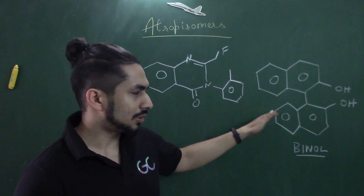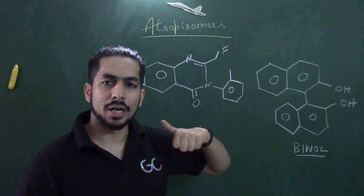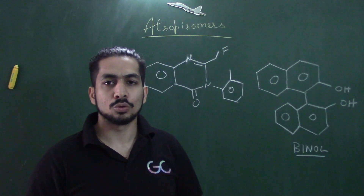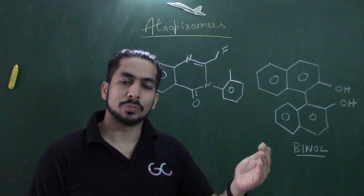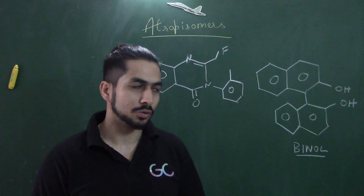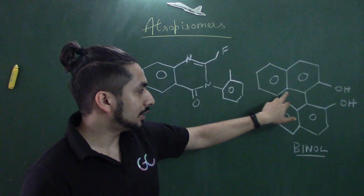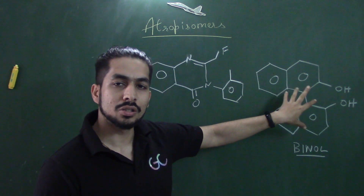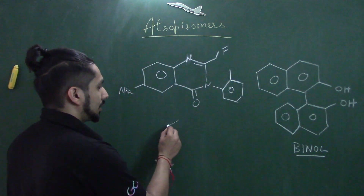For example, if you look at this molecule — many of you might have seen it — this is called BINOL, a very popular structure, and it is chiral. It looks like a biphenyl system. For atropisomerism to exist, the plane of symmetry should be absent. In this molecule, the two OH groups and the tertiary carbons on both ends cause hindered rotation about the carbon-carbon single bond.